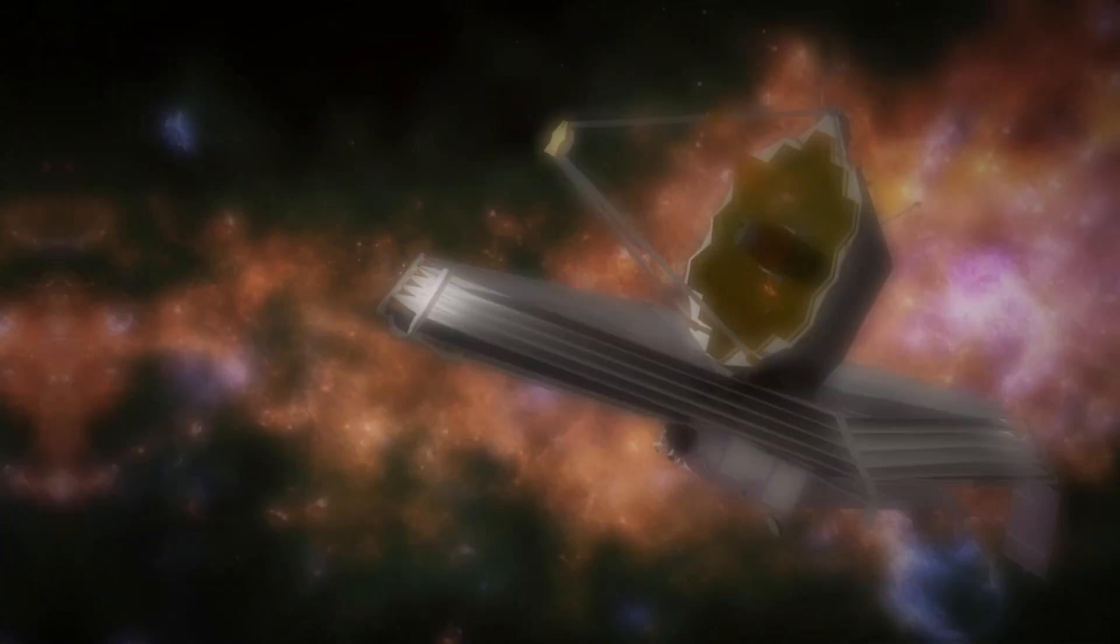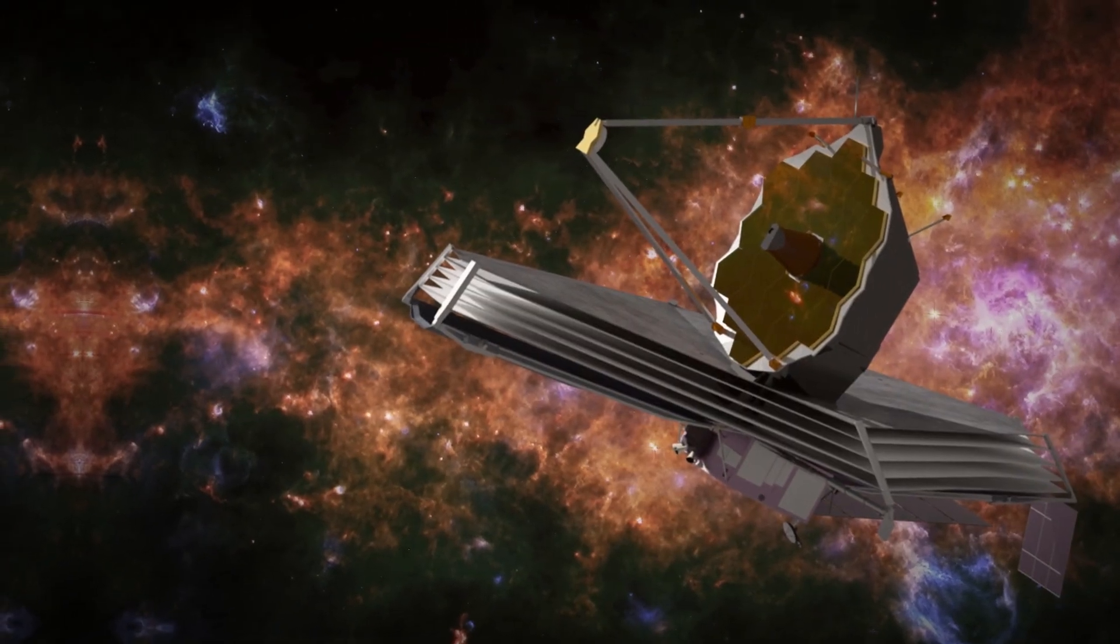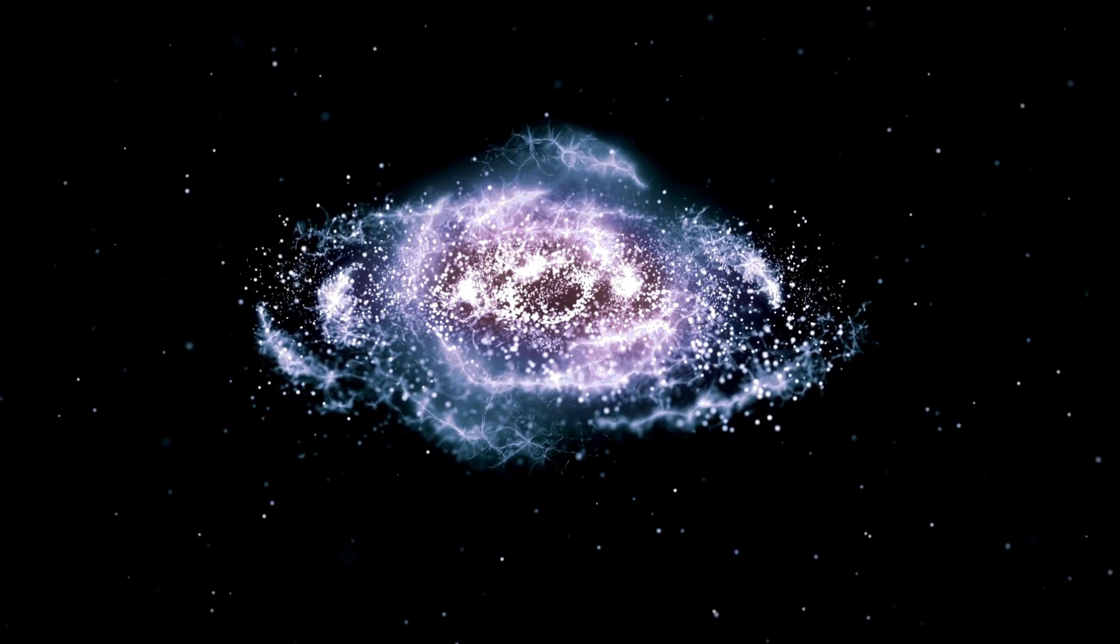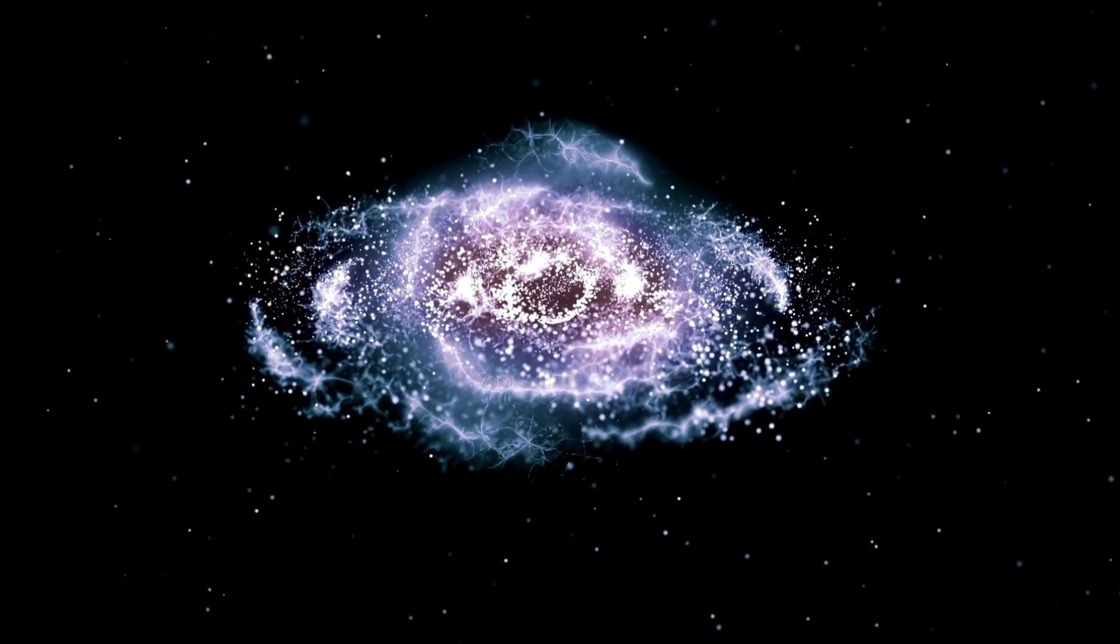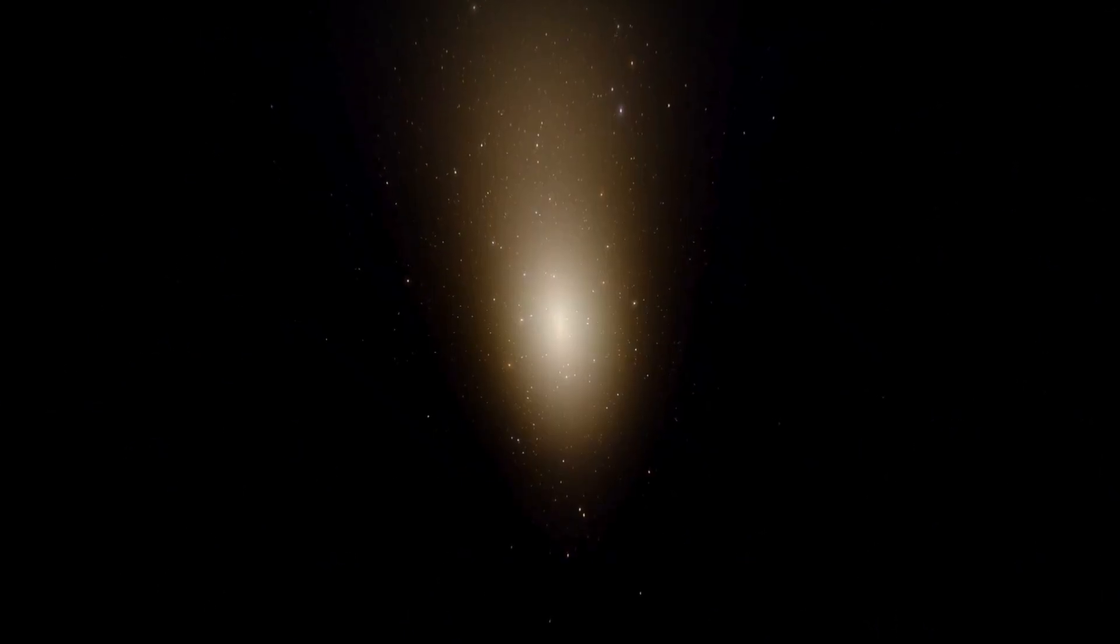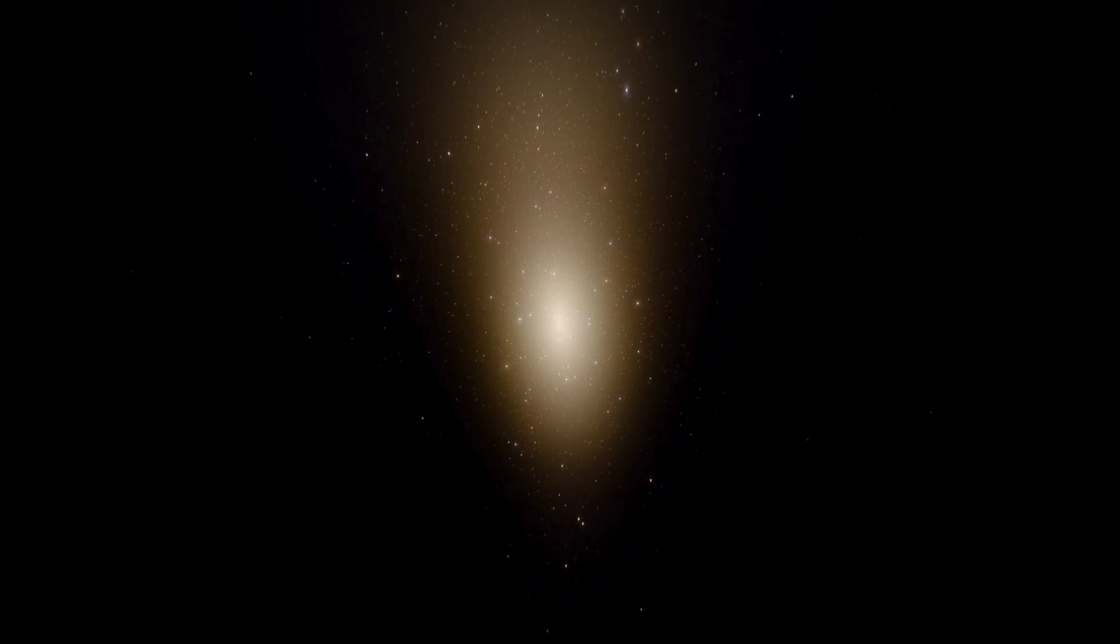The James Webb Telescope has recently achieved an astronomical milestone by capturing the most detailed image of Proxima b, an exoplanet located in our galactic backyard. This breakthrough has illuminated incredible features of this world, suggesting its potential to support life.